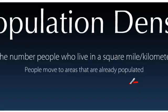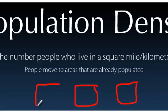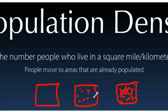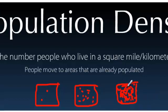Let me give you a little visual here. Let's say we have three square kilometers in three different places in the world. This one has people living all over the place, this one still has a fair amount of people, and this one has two. So we have a high density area, a medium density area, and a low density area.